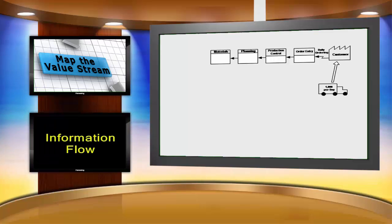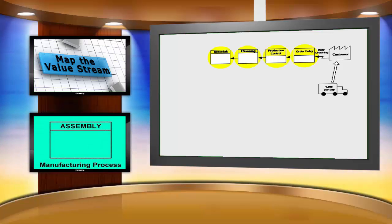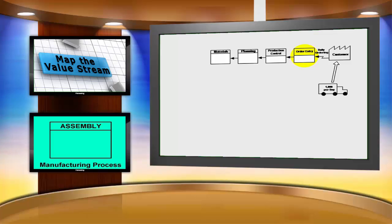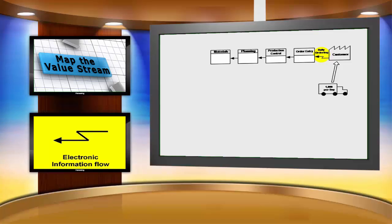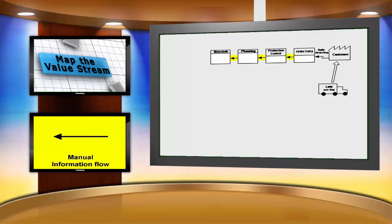This series of boxes represents the flow of information as related to these orders. Each of these boxes is an icon that represents a particular manufacturing process — one process box equals an area of flow. All processes should be labeled. The boxes are also used for departments such as production control. In our case study, the orders go through order entry, then production control, then planning, and then materials. The zigzag arrow is an information icon representing electronic information flow, for example via EDI. The straight arrows are information icons that represent manual information flow, for example a production schedule or shipping schedule.